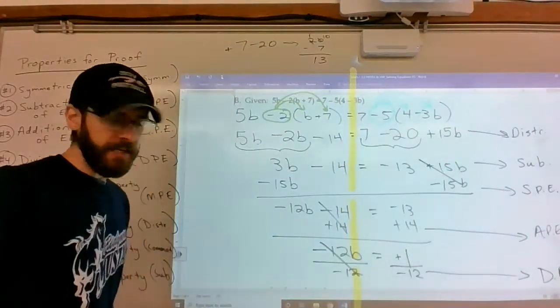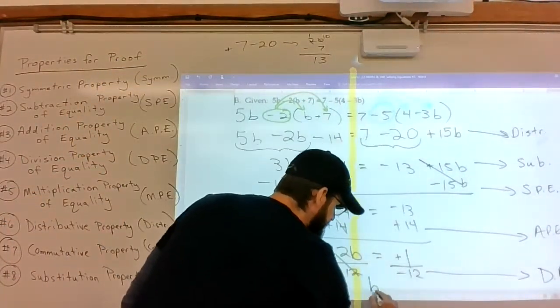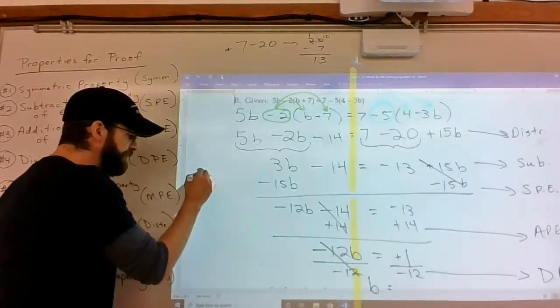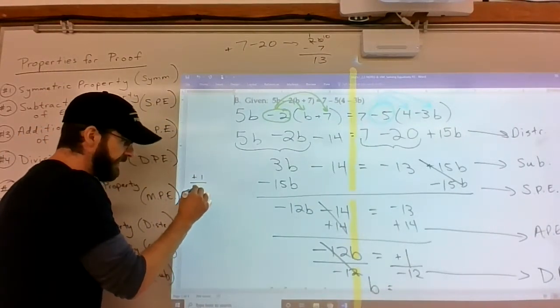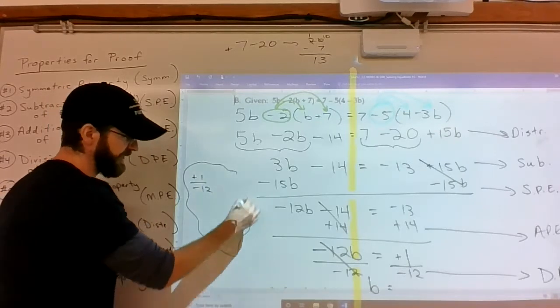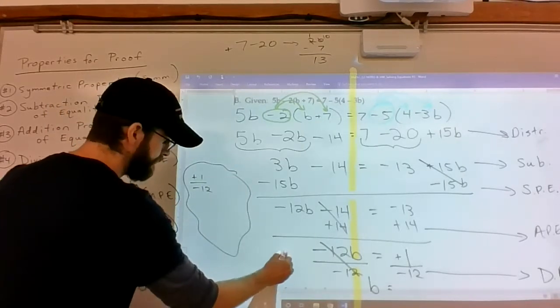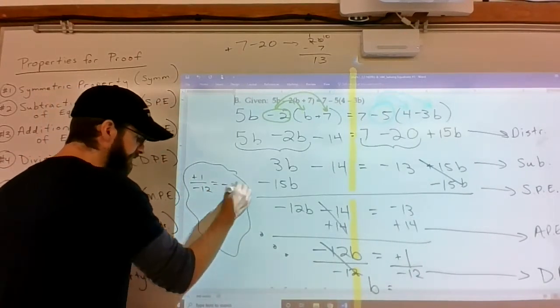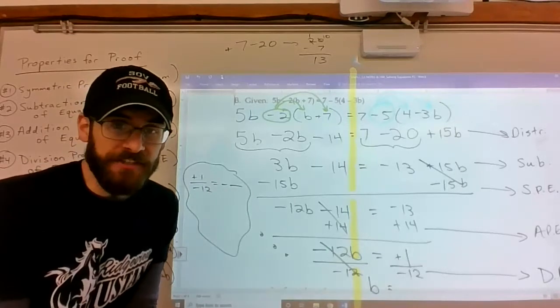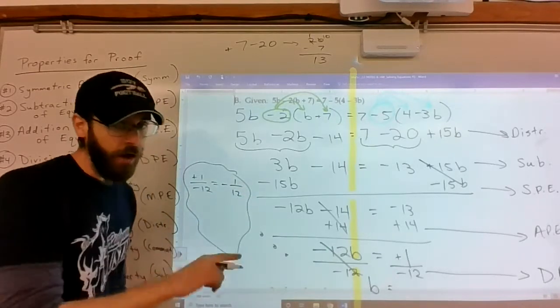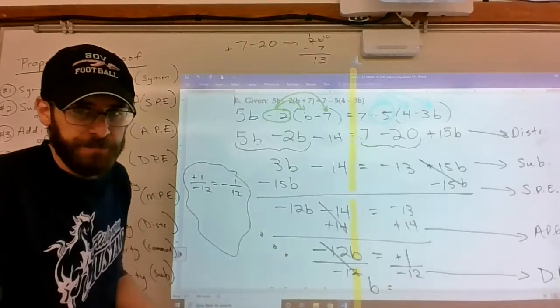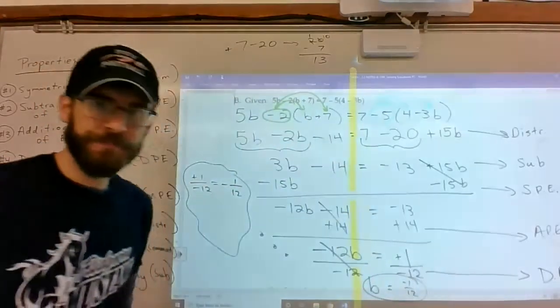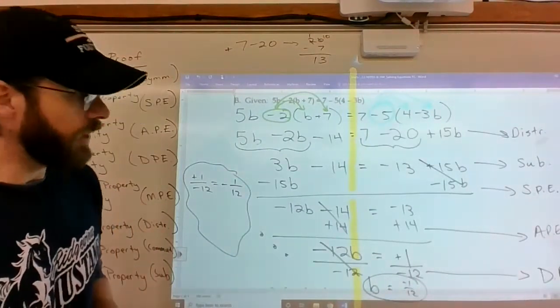Division property of equality. Creates a 1 in front of the b. And then as I said in a previous video, if you take positive 1 divided by negative 12, here's my scratch work off to the side, my thought bubble almost. A positive over a negative is a negative. And I can't do anything with 1/12. You simplify the fraction as you see it.